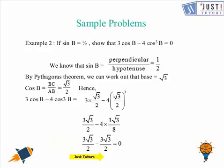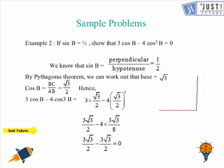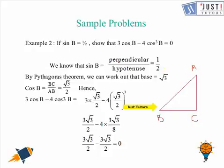One more thing: if we are taking cos B as BC over AB then we must have a triangle with base as BC. So let us draw one. This is the baseline, that is the perpendicular, and that is the hypotenuse. We name them so that the base is BC, making B and C the two vertices and the hypotenuse going to A. This now properly defines cos B as BC over AB. So this is the required solution to the problem.